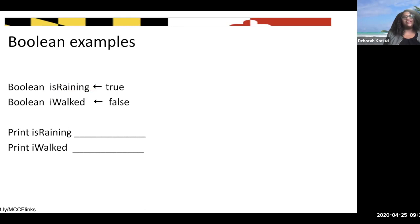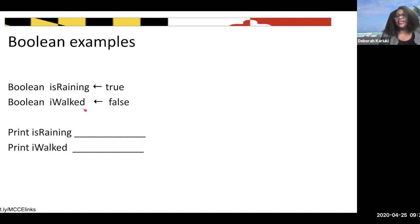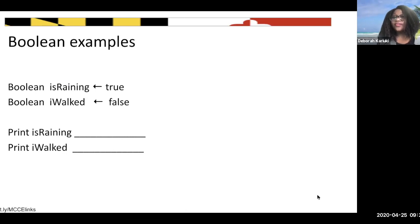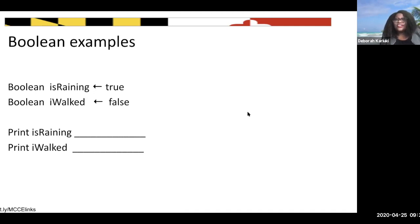So if we say print isRaining, what's the answer? I see some people put a T - and that's true. The first answer is going to be true and the second one, iWalk, is going to be false. Just writing T means the same thing.